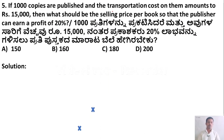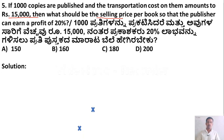The last question: if 1000 copies are published and the transportation cost amounts to Rs. 15,000, what should be the selling price per book so that the publisher can earn a profit of 20%? We need to find the selling price. Selling price equals total cost plus profit. First, we need to calculate the total cost.